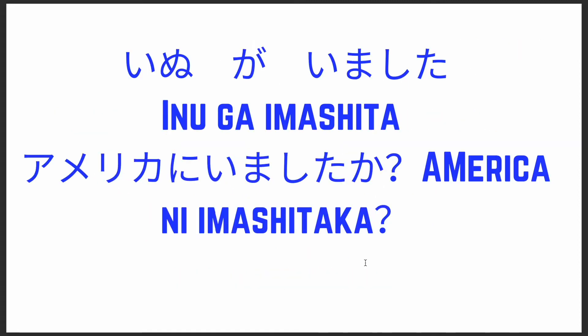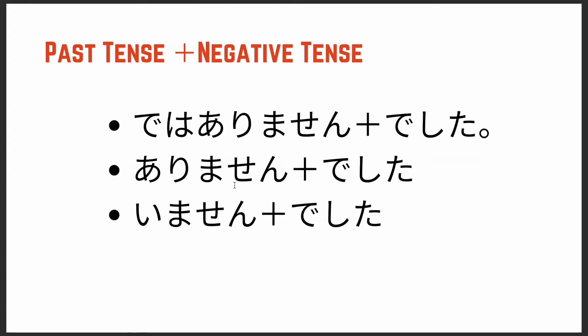For iru: 'inu ga imashita' — I had a dog before, but the dog is not there anymore. 'Amerika ni imashita ka' — 'Were you in America before?'